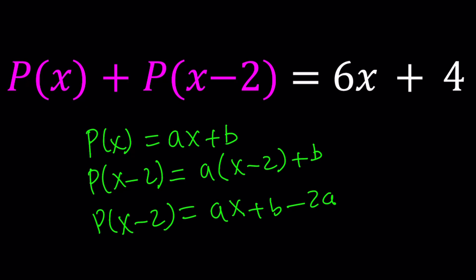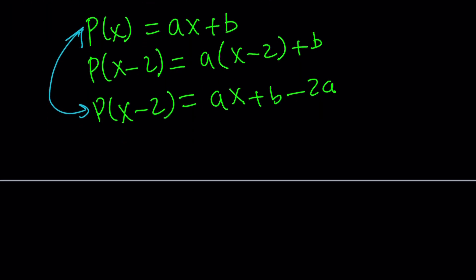Let's go ahead and add these two expressions and set it equal to 6x + 4. So we have Ax + b + Ax + b - 2a = 6x + 4, and then we can basically find A and B from here. Let's go ahead and arrange the terms on the left.